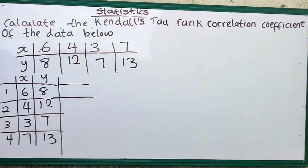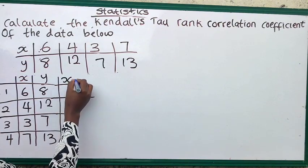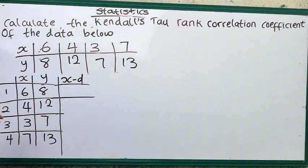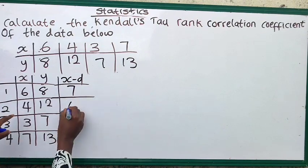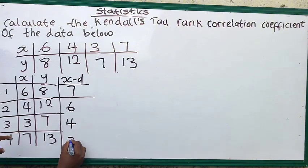So the next thing is to arrange our x in a descending order and arrange y in descending order. So let's start with x, let's arrange x in descending order. So it will be 7, 6, 4, and 3.